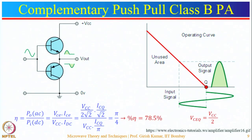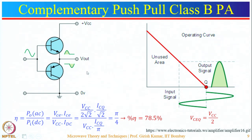This transformer-based push-pull is not commonly used because the center-tap transformer is costly and makes the amplifier larger. A better push-pull arrangement uses complementary transistors — NPN and PNP — connected back to back. For the positive half cycle, the NPN transistor conducts and the output appears through it; for the negative half cycle, the PNP transistor conducts. A load connected at the output receives a complete waveform.